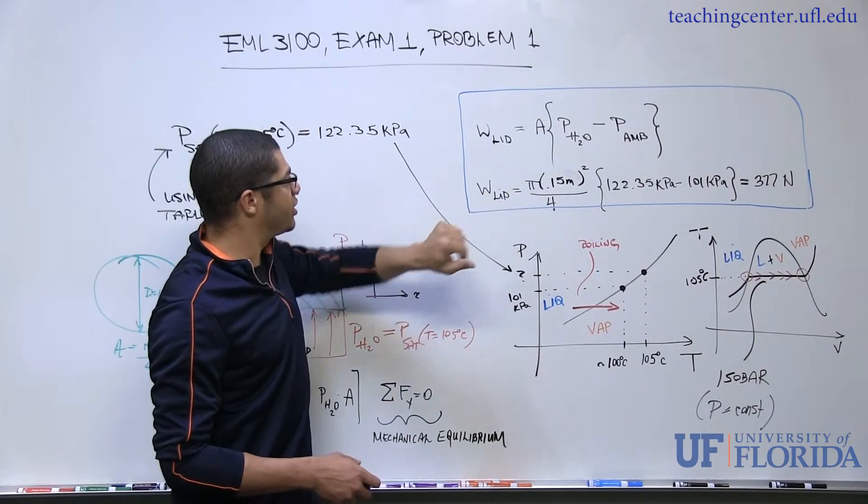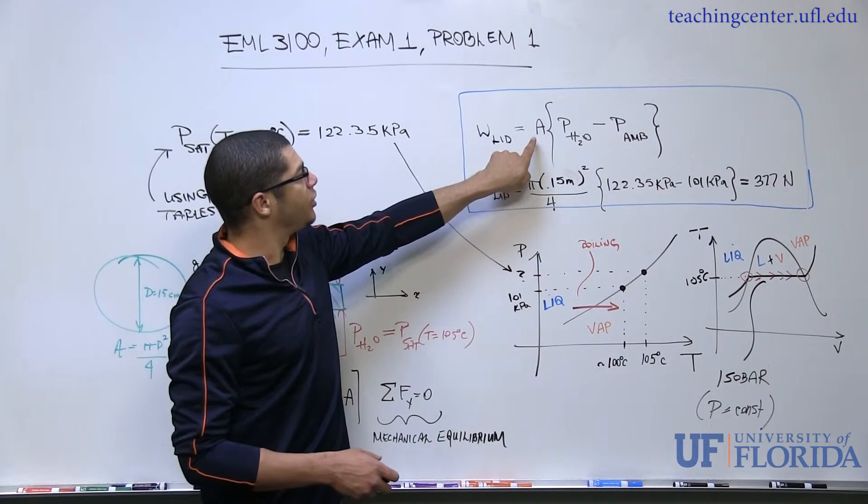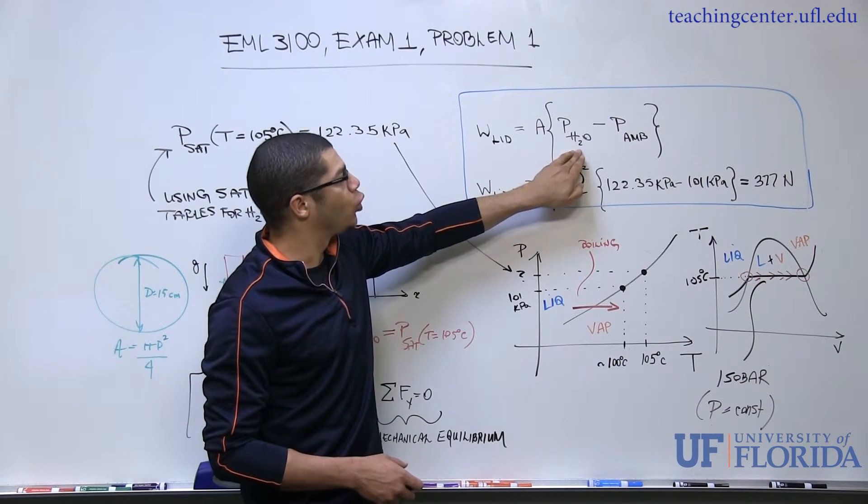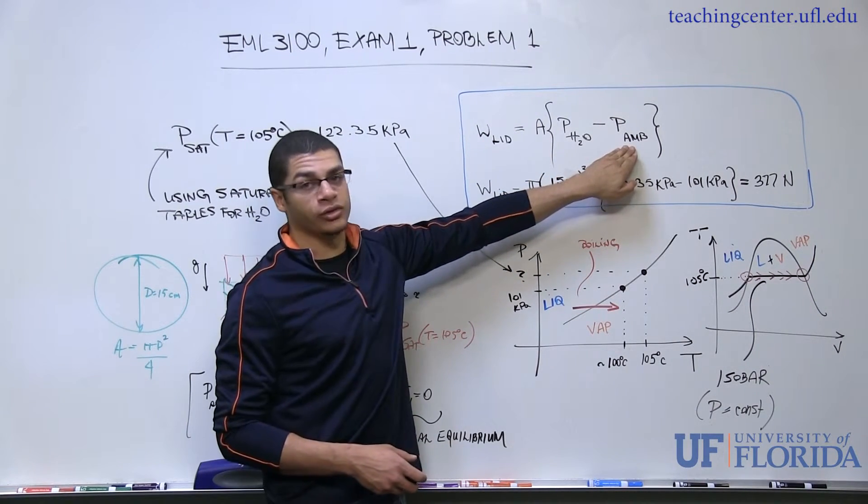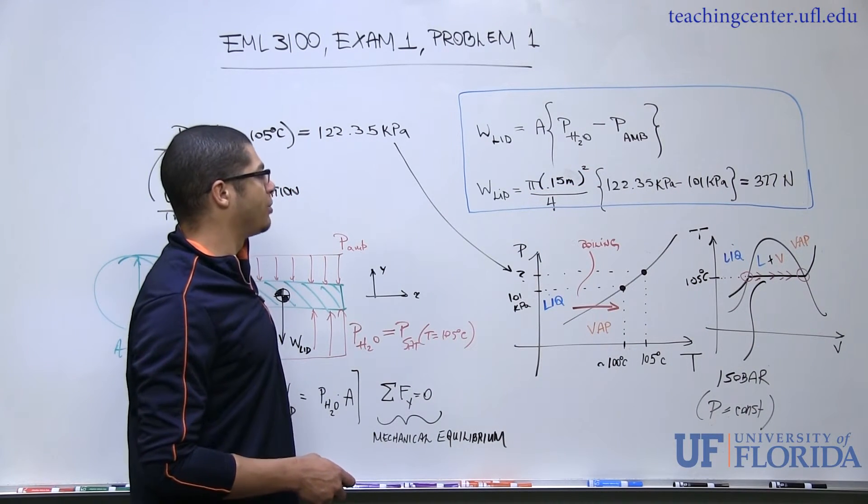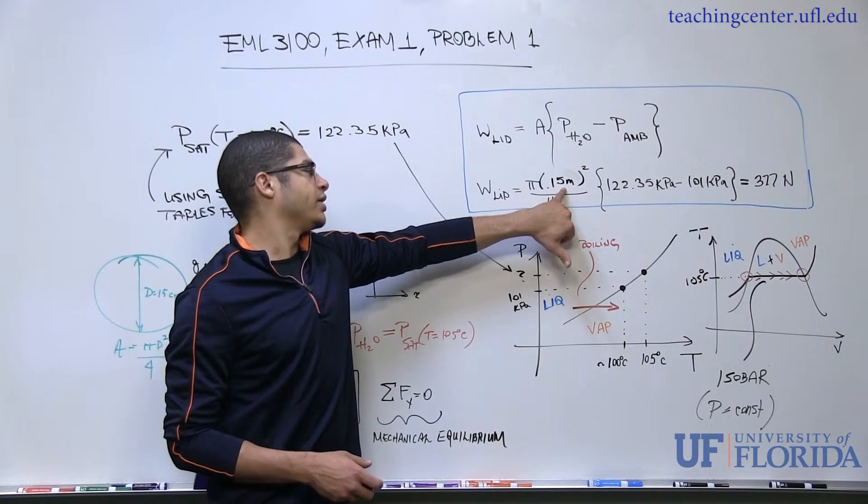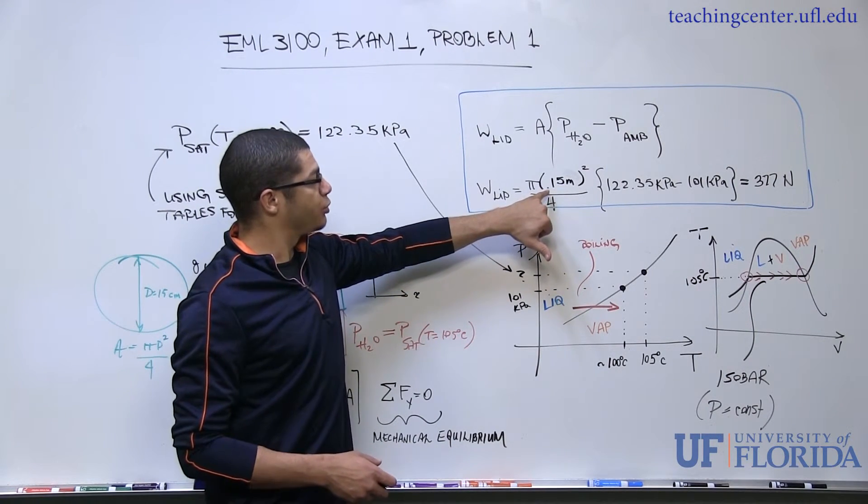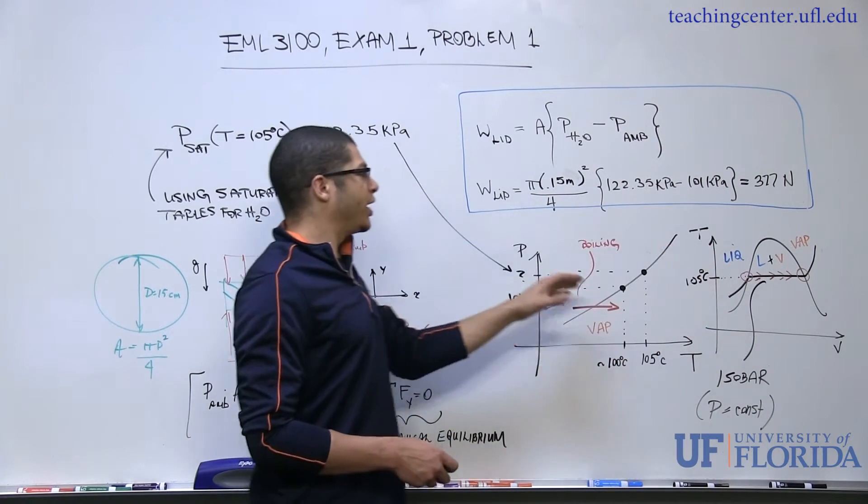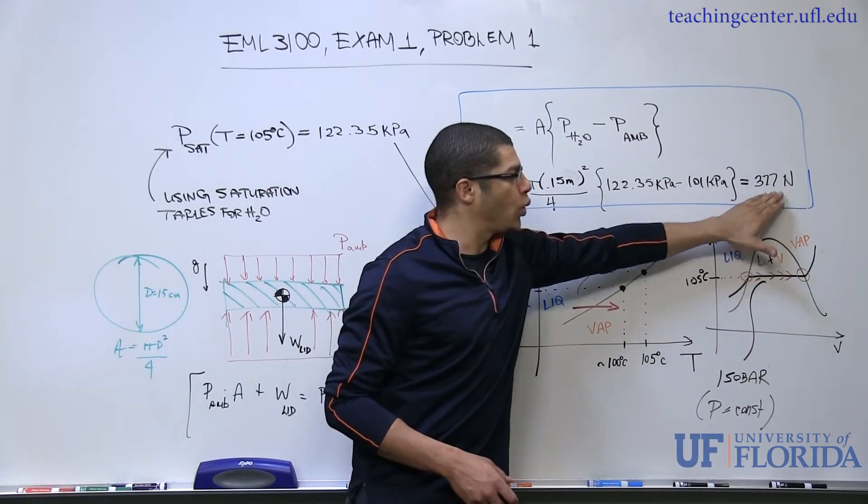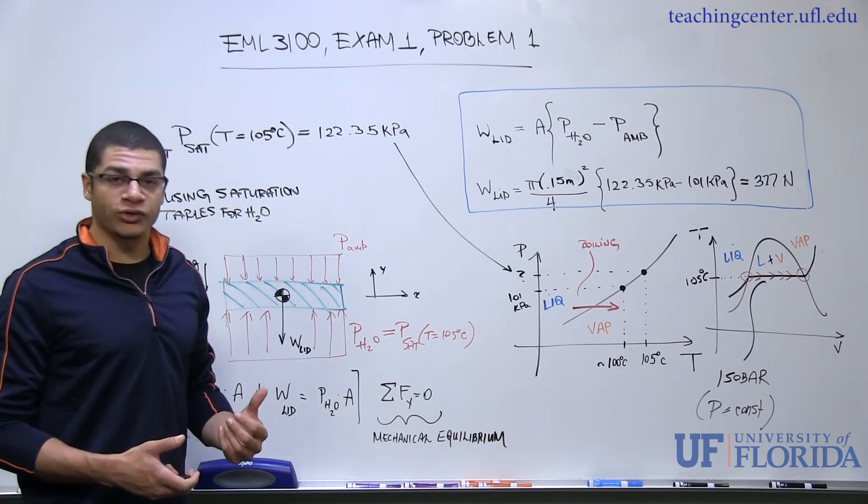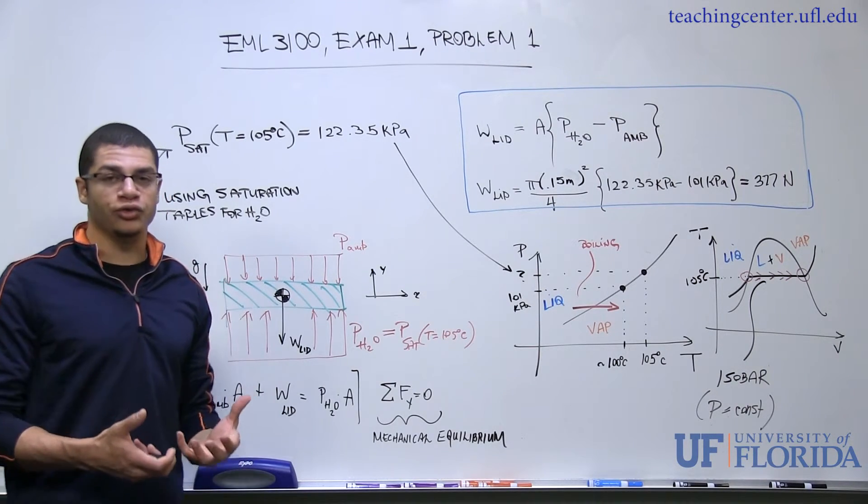So since we've manipulated the expression, we get the wetted area of the lid times the difference between the saturation or vapor pressure of the water and the ambient pressure on the top side of the lid. And if we simply plug in the values given in the problem statement - the diameter of the pot or the lid at 15 centimeters or 0.15 meters, and the ambient pressure of 101 kPa - and do the algebra, we get the required weight of the lid is 377 Newtons in order to force the water to boil at 105 degrees centigrade.